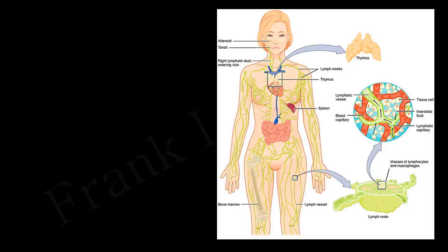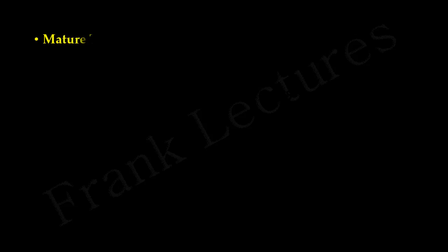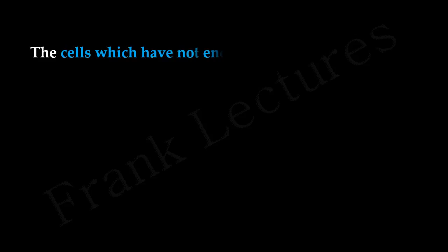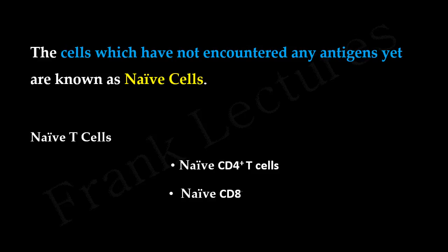T-cells which have completed their maturation leave the thymus and enter the bloodstream. These mature T-cells keep recirculating among blood, lymph, and secondary lymphoid tissues such as lymph nodes. Mature T-cells are of two types: CD4 positive cells and CD8 positive cells. These recirculating T-cells have not encountered any antigens yet. Cells which have not encountered any antigens are known as naive cells. Therefore, these recirculating T-cells are naive T-cells — that is, naive CD4 positive T-cells and naive CD8 positive T-cells.